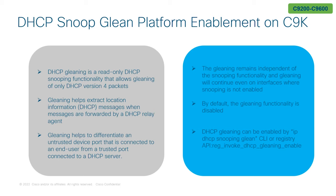In 17.10, the DHCP Snoop Glean feature is now enabled on our Catalyst 9000 series switches. This feature provides a read-only DHCP snooping option for customers who do not want to enable DHCP snooping but still want to be able to differentiate an untrusted port device connected to an end user from a trusted port connected to a DHCP server.